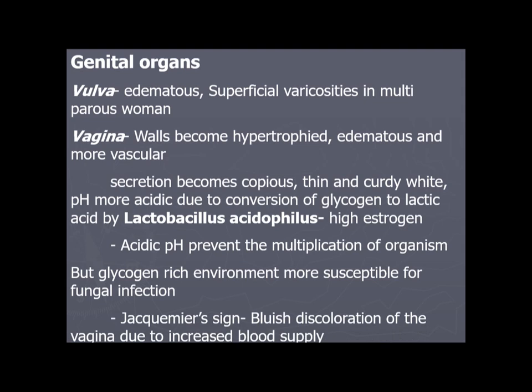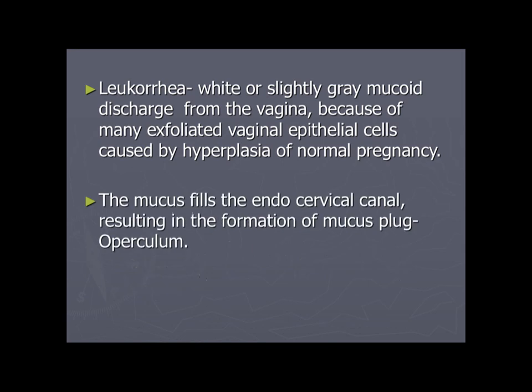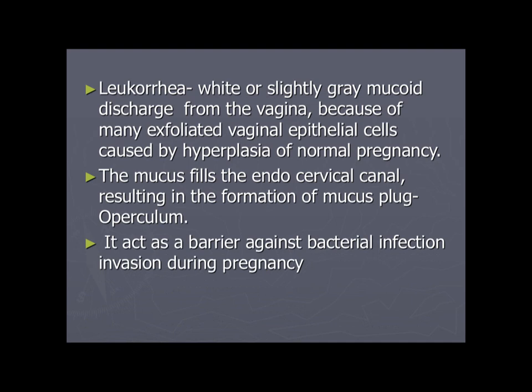Jacquemier's sign is a bluish discoloration of the vagina due to increased blood supply. Leucorrhea is the white or slightly gray mucoid discharge from the vagina due to exfoliated vaginal epithelial cells caused by hyperplasia in normal pregnancy. Mucus fills the endocervical canal, forming a mucus plug known as the operculum, which acts as a barrier against bacterial invasion during pregnancy.